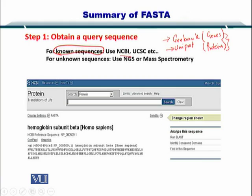Along with the sequence, you can also input the IDs. Both the sequence and the IDs are available from these resources. However, if the sequence is unknown — that is, you don't know the complete sequence of the molecule you want to compare — then you can perform NGS or MassSpec to obtain the sequence and then simply input it into the FASTA website.